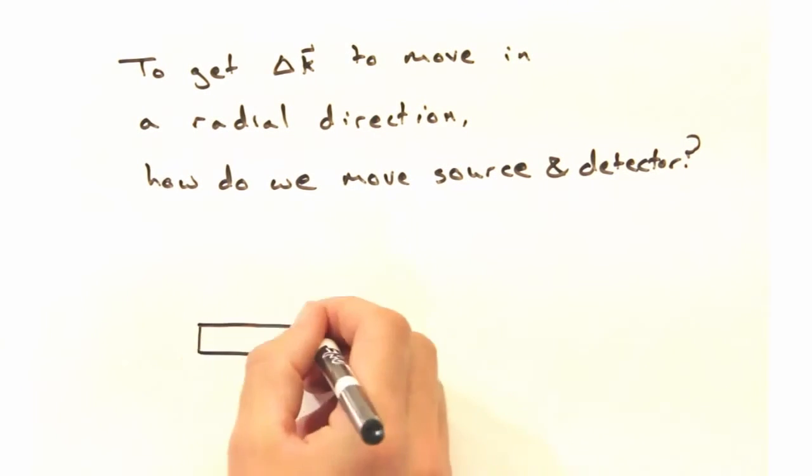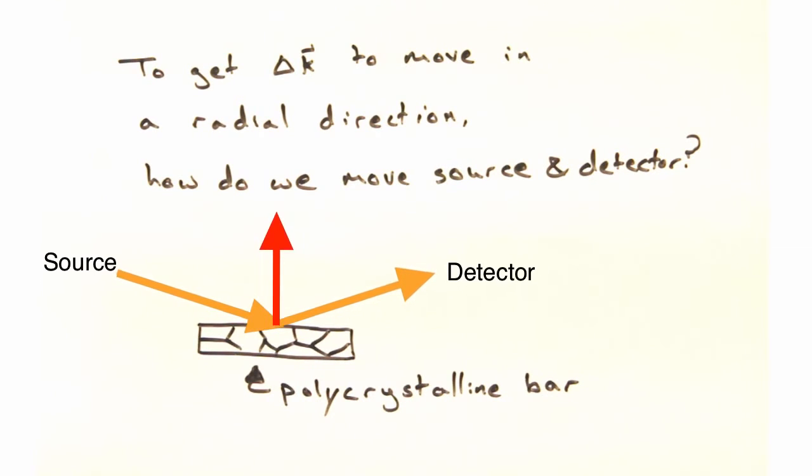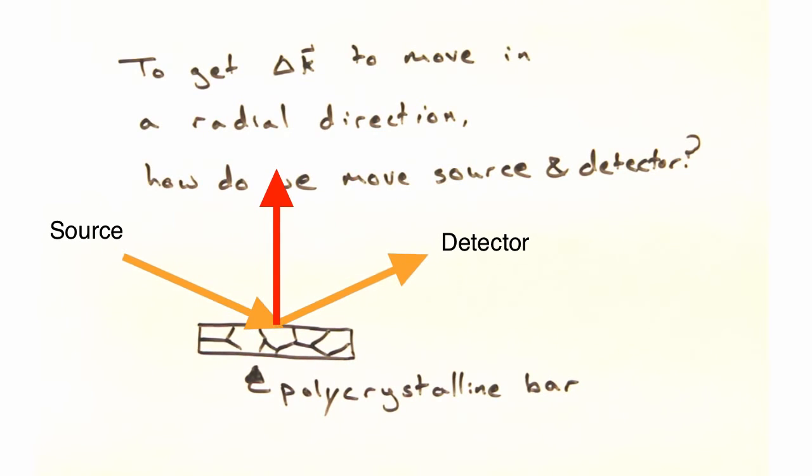Well, let's look at a k and k' configuration like so, where the delta k vector is perpendicular to the sample plane. Then if we move the source and detector together, the new delta k should look like so. This gives us the radial growth we were looking for. Absolutely.